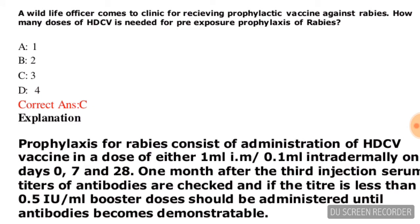Next question: a wildlife officer comes to the clinic for a prophylactic vaccine against rabies. How many doses of HDCV are needed for pre-exposure prophylaxis of rabies? Options are: two, three, or four. The correct answer is option C — three doses are needed.